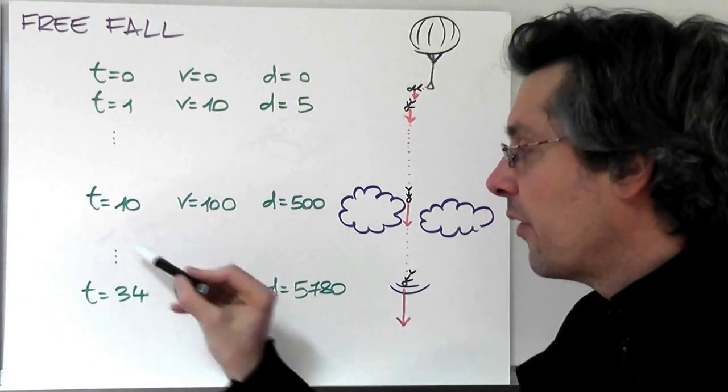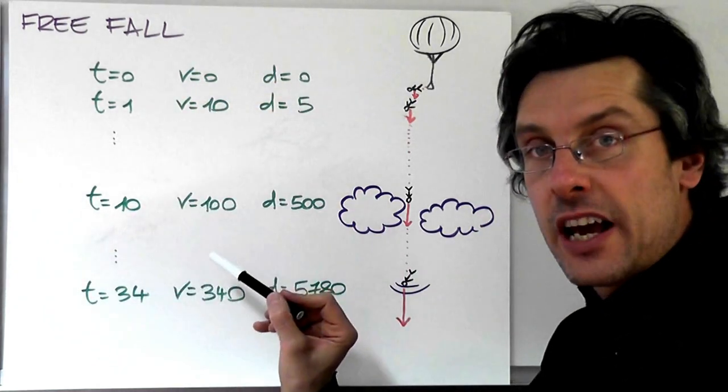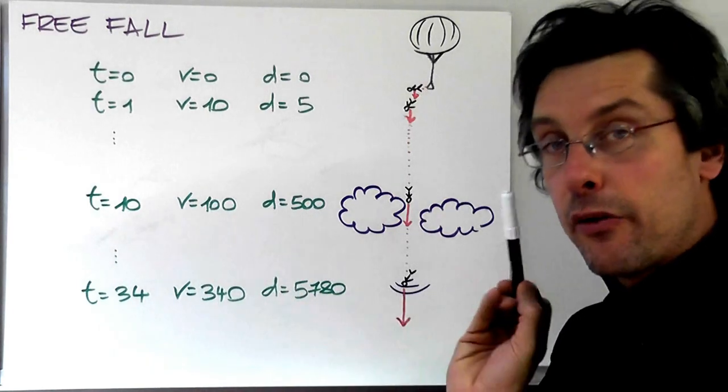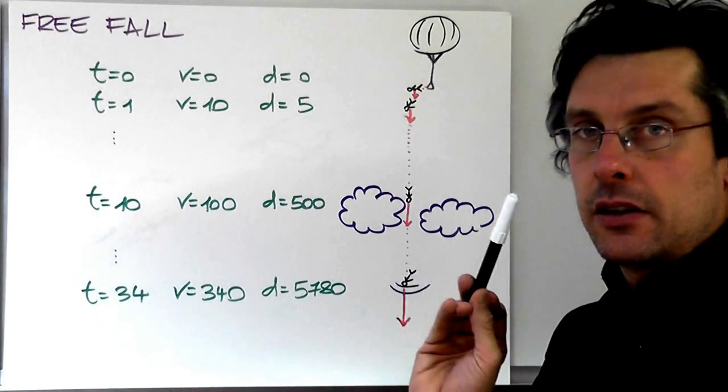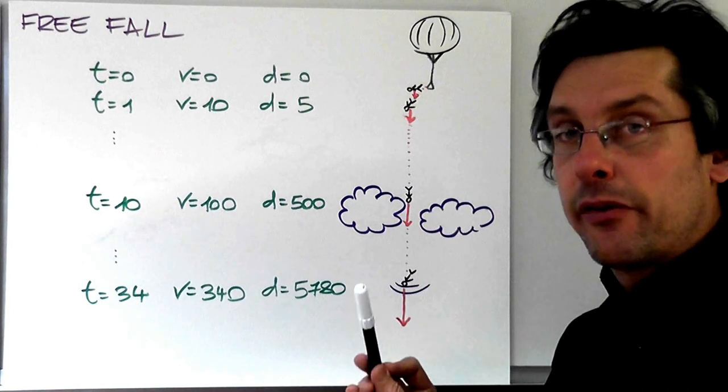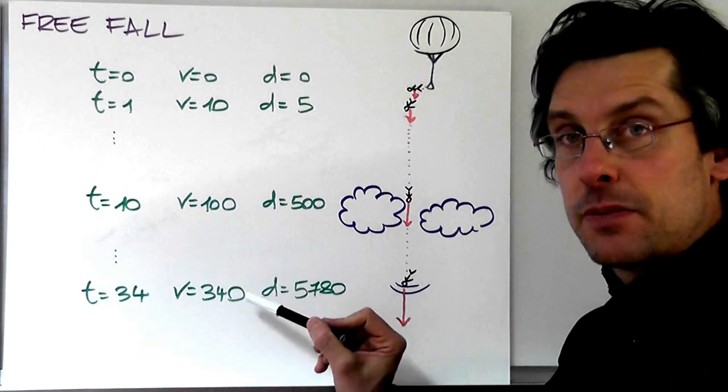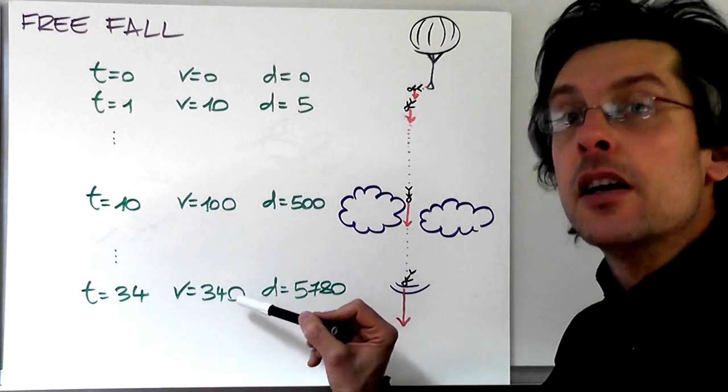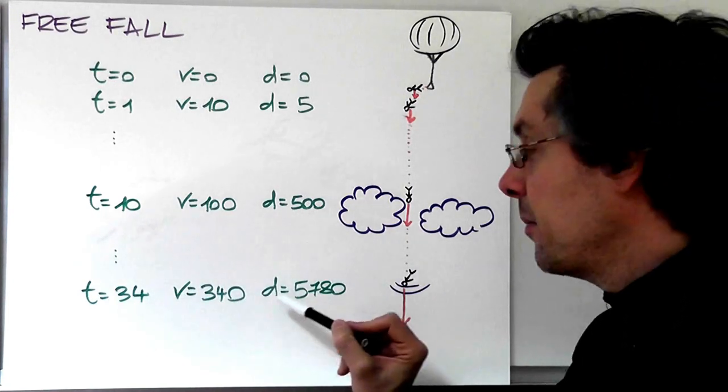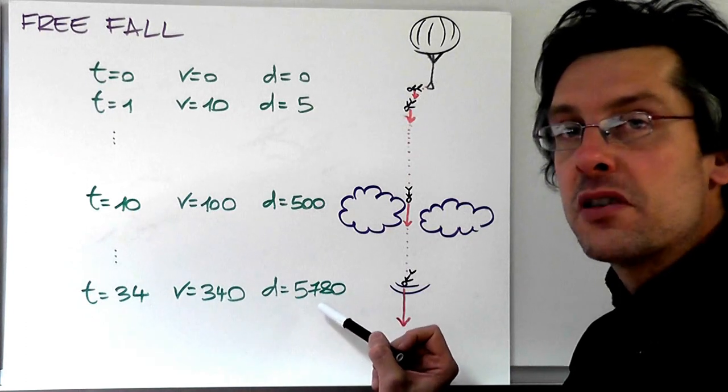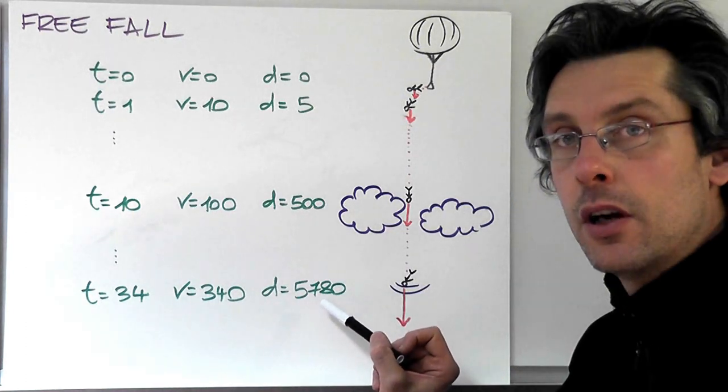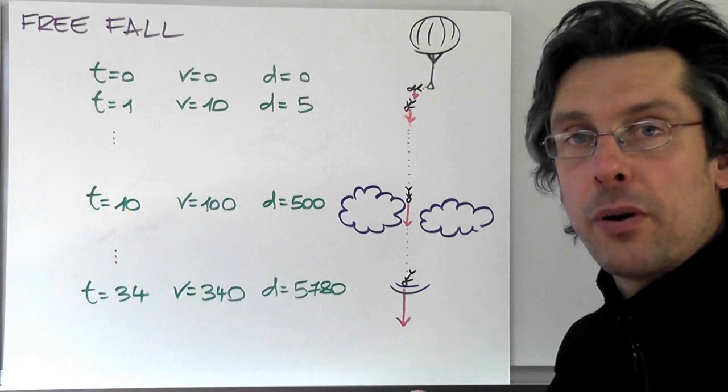We go down still. And finally, after 34 seconds, but that is only if we completely neglect air resistance and if we assume g equals 10, he would have reached a speed of 340 meters per second. That is, the speed of sound. And in the meantime, he has traveled almost 6 kilometers from the initial drop-off point.